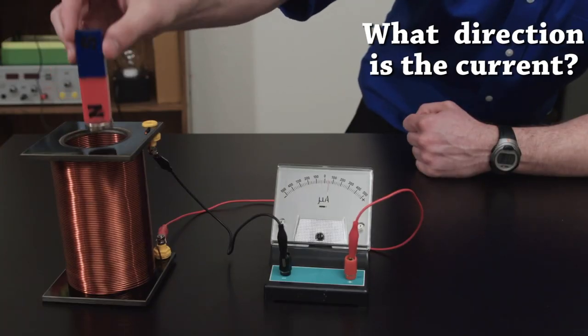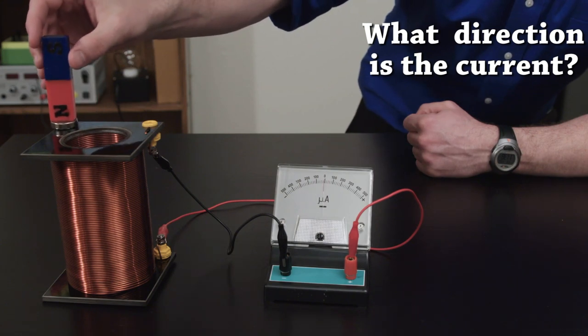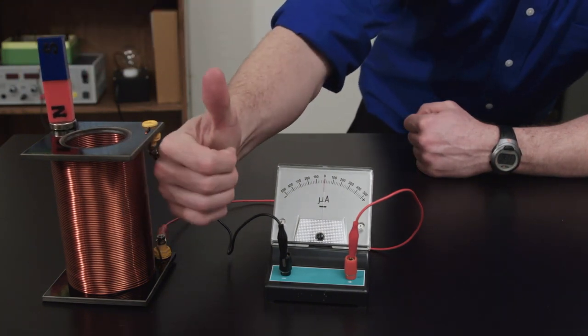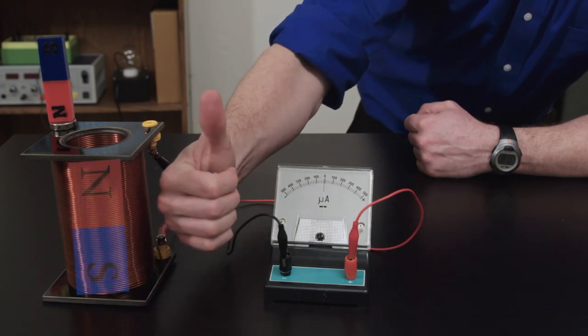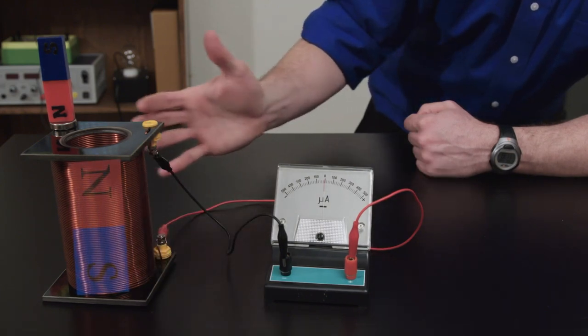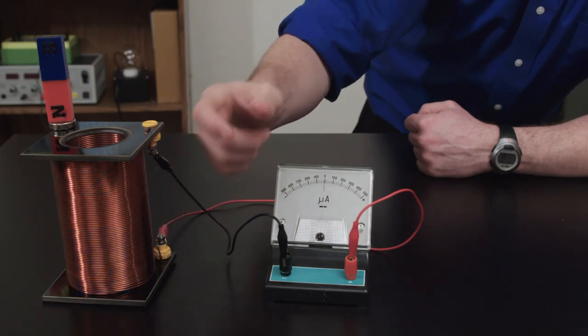Well, as it goes in, a current will be generated that points in the opposite direction of the magnet's plunge. That is, as it goes in, it is repelled by the electromagnet. If you use your right hand, it is very easy to predict.